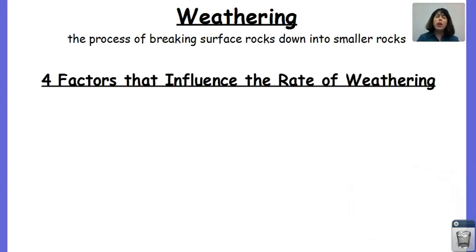And now we have to talk about how can we change or increase or decrease the amount of weathering that takes place on a rock. And there are four unique factors that we're going to examine right now that influence the rate of weathering. Rate is another way to say speed.